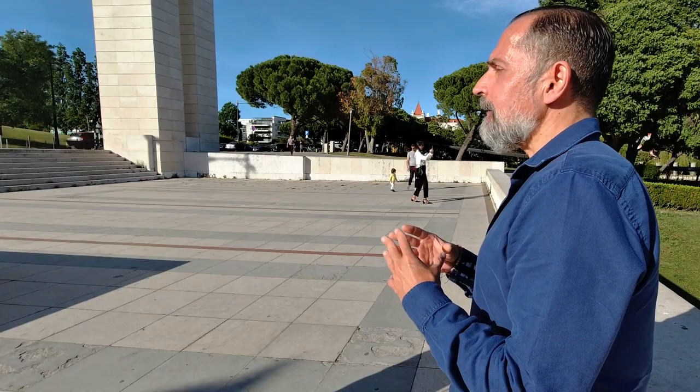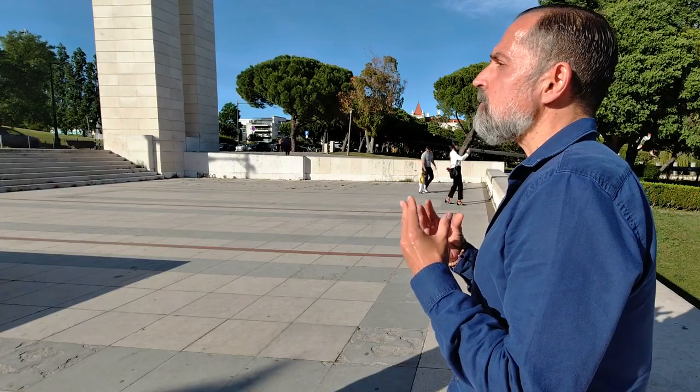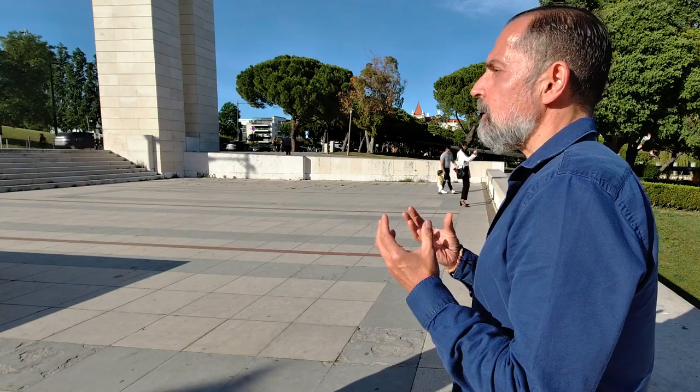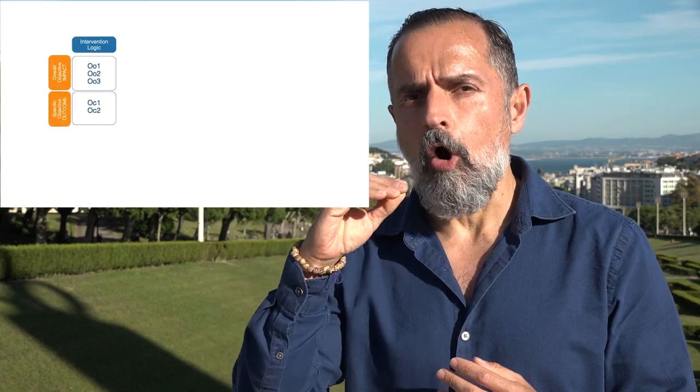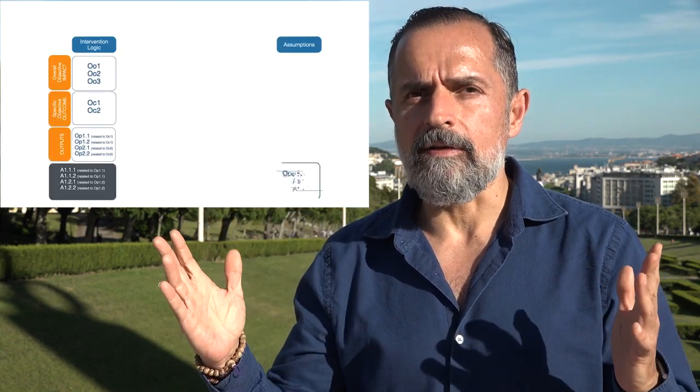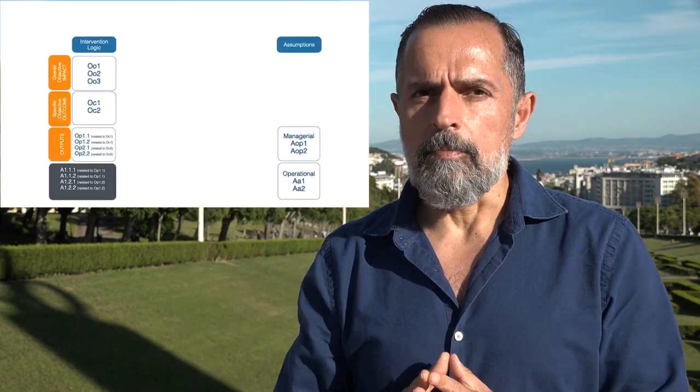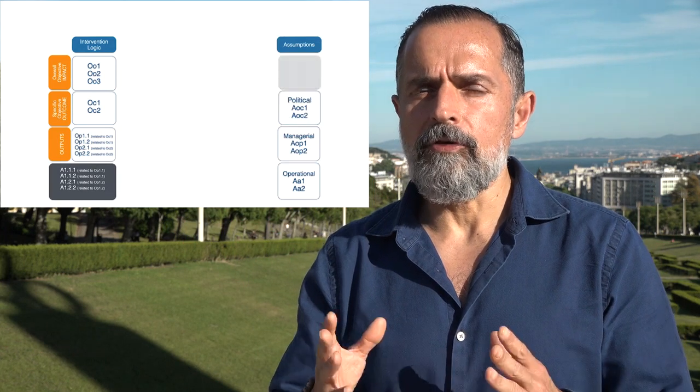And impact indicators allow us to measure sustainability. Were the benefits produced by the project sustainable enough to produce long-term changes in economy, in society, in culture? And it is with the indicators and our horizontal logic that we complete our model with the three logics.